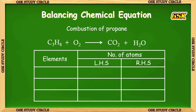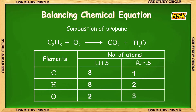The elements here are carbon, hydrogen, and oxygen. The number of atoms of carbon on LHS is 3 and on RHS is 1. Hydrogens: LHS is 8, RHS is 2. Oxygens: LHS is 2, and RHS is 2 plus 1, which is 3.